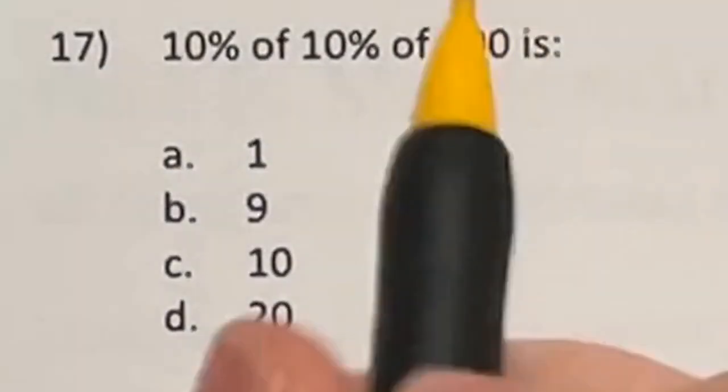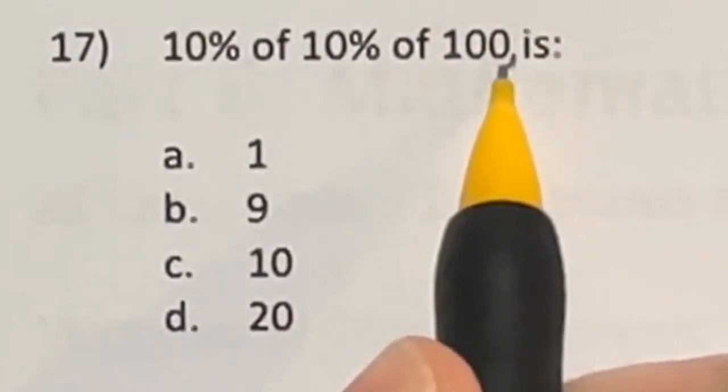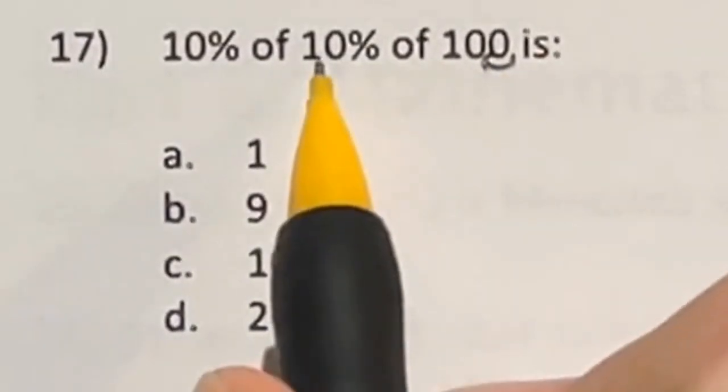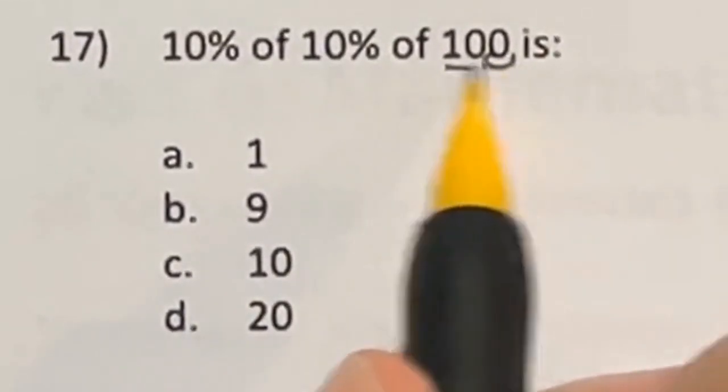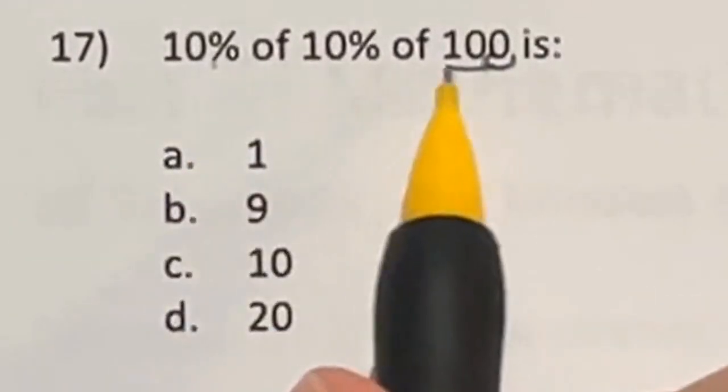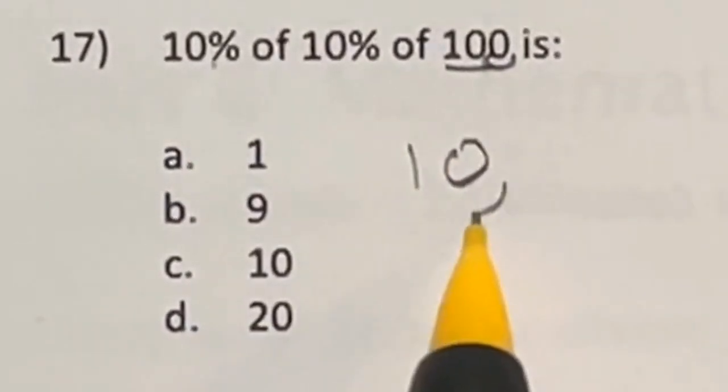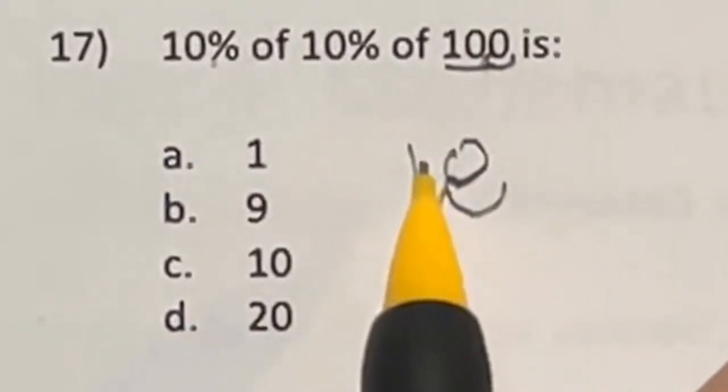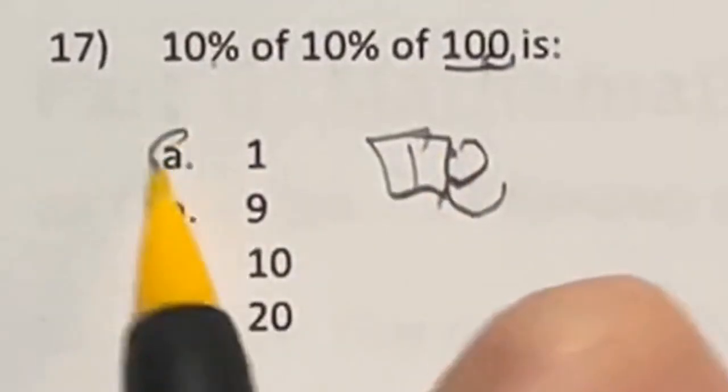Finding 10% of any number is easy. You just take the decimal place and you move it to the left once. So that means that 10% of 100 is really just 10. So then if I'm taking 10% of 10, just move the decimal place over 1 again, and that means that our answer should be 1, which is A.